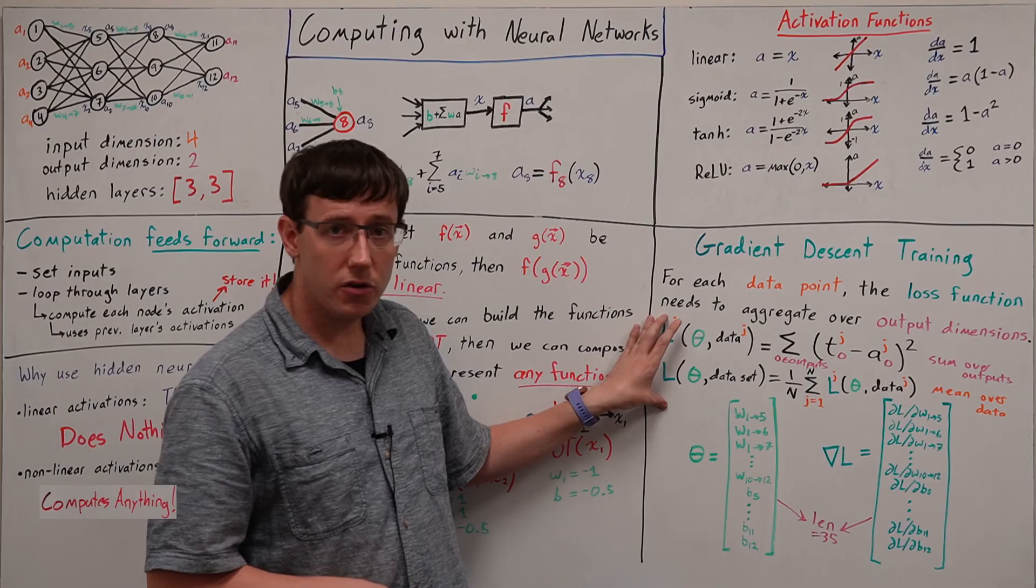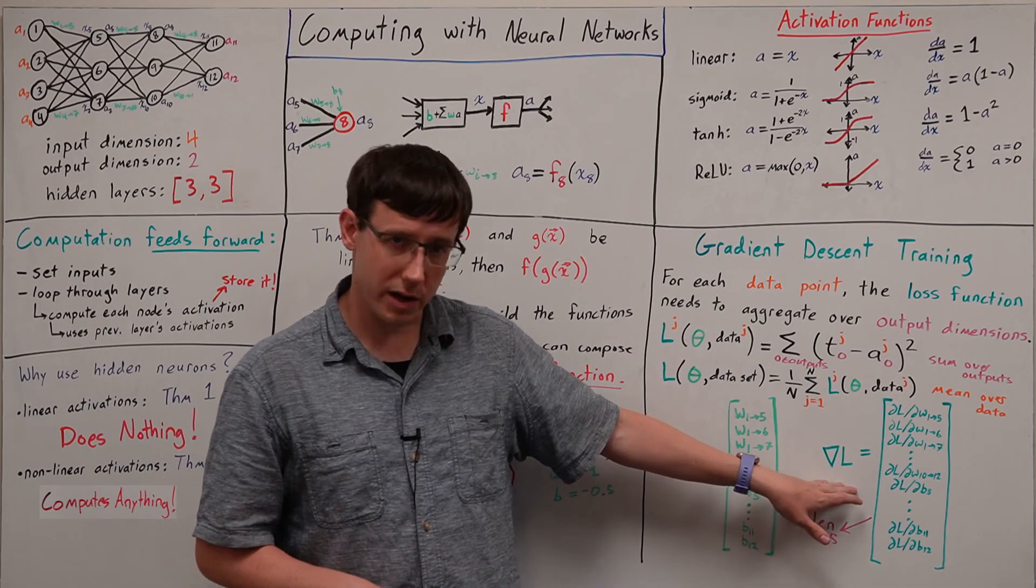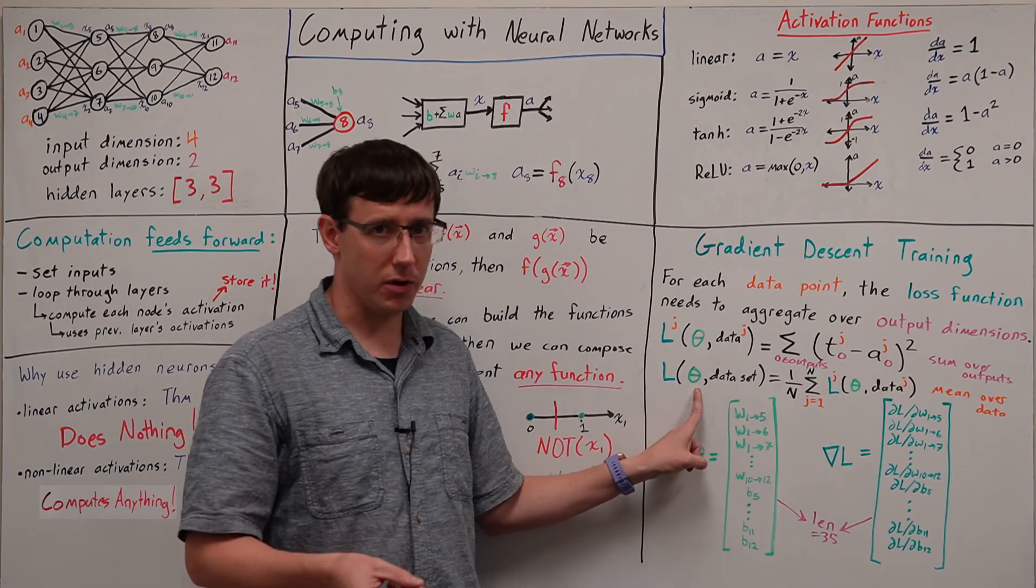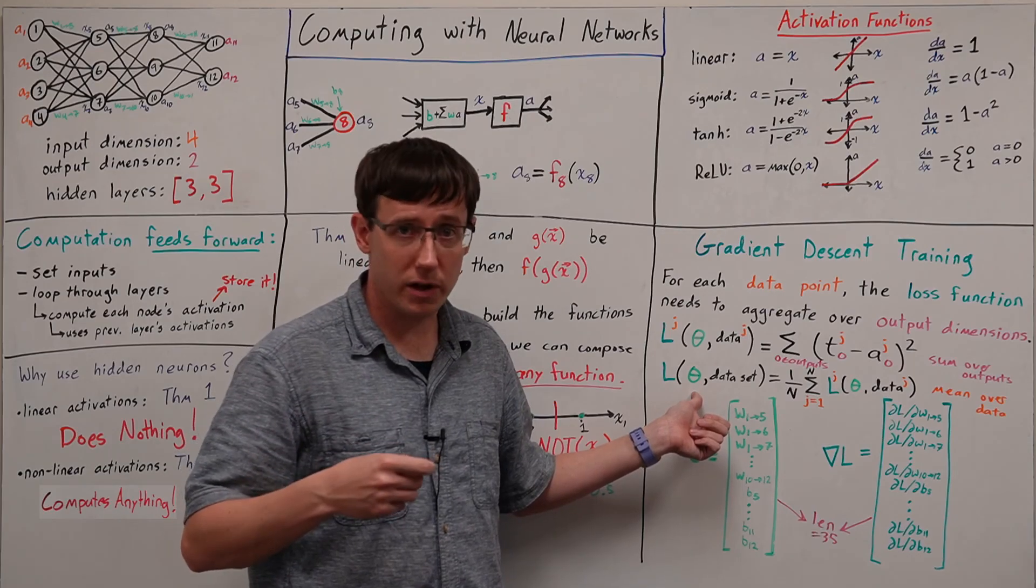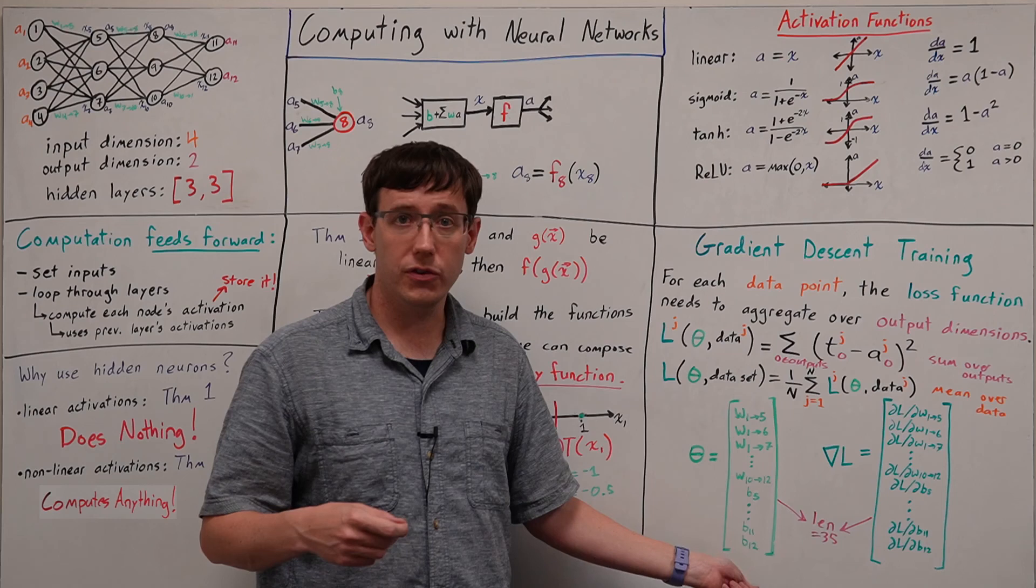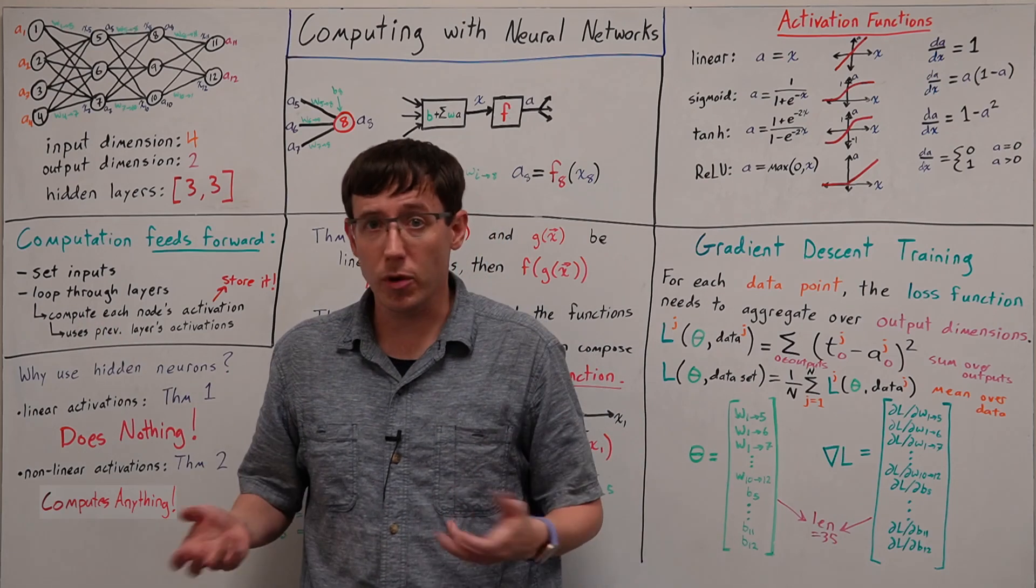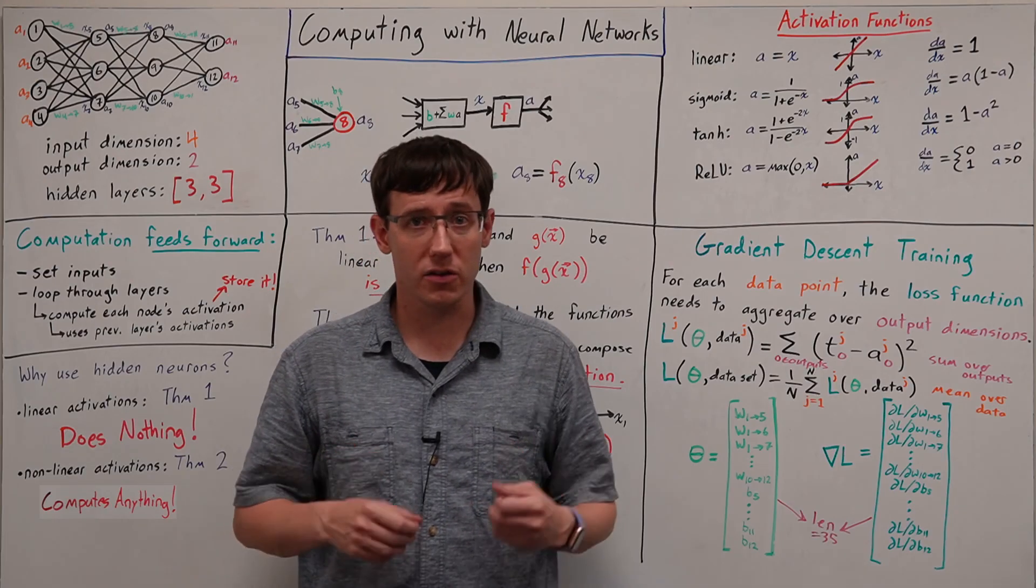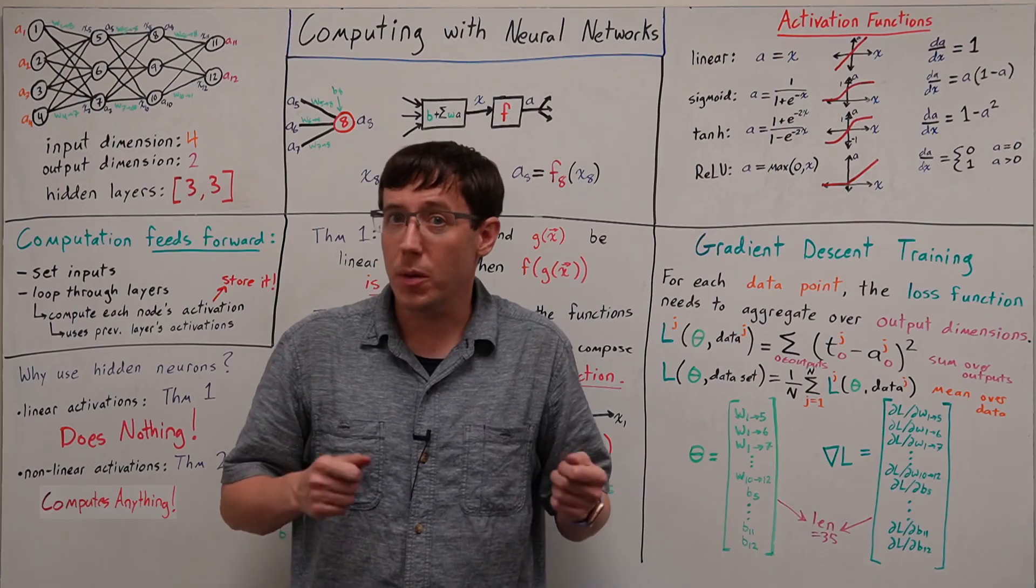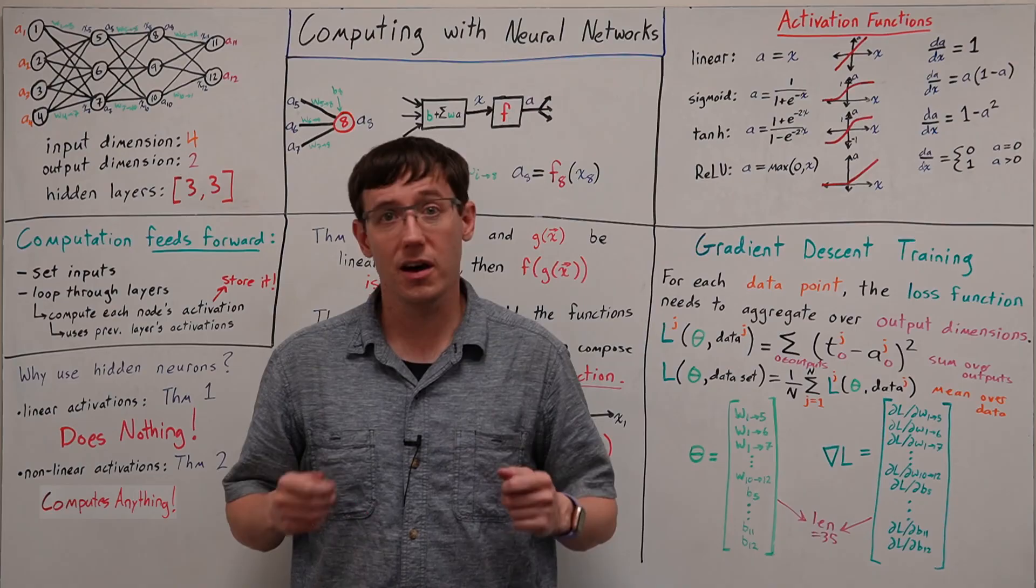So with this definition of the loss on the data set, we can compute the gradient of the loss evaluated at the current parameters, then take a step in the minus gradient direction to update all of the weights and the biases in a way that reduces the loss of the network. When we do this repeatedly, we'll be performing gradient descent. And in the next video, we'll go into much more detail on the backpropagation algorithm for performing gradient descent updates on a neural network.